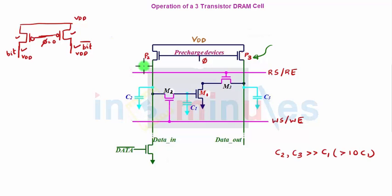In the three transistor DRAM, we also have a pre-charged device, but here I have not used PMOSs. I have used two NMOSs connected back to back with phi as the input and VDD. We know that NMOS is not good at producing a perfect one, but it will still produce an output interpreted as logic high. We can use a PMOS pre-charge device also, but for understanding here I have kept all NMOSs.